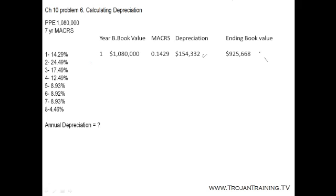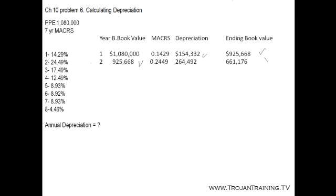So our ending book value is $925,668. This ending book value becomes the beginning book value for the following year, and then we take that new book value and depreciate it at the depreciation rate for that particular year. For year 2 the depreciation rate is 24.49%, and we go on year after year, remembering that the ending book value for any year becomes the beginning book value for the next year.